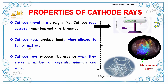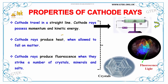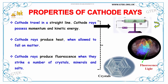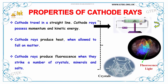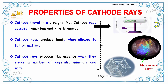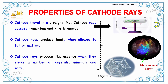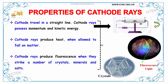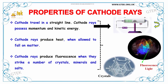Now we will talk about the properties of cathode rays. The cathode rays travel in a very straight line, as you can see here. Cathode rays possess momentum and kinetic energy. Cathode rays produce heat when allowed to fall on matter. Cathode rays produce fluorescence when they strike a number of crystals, minerals, and salts.